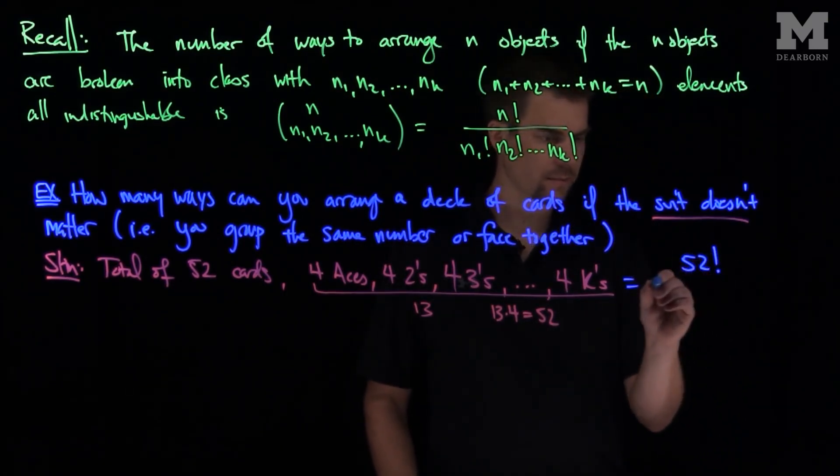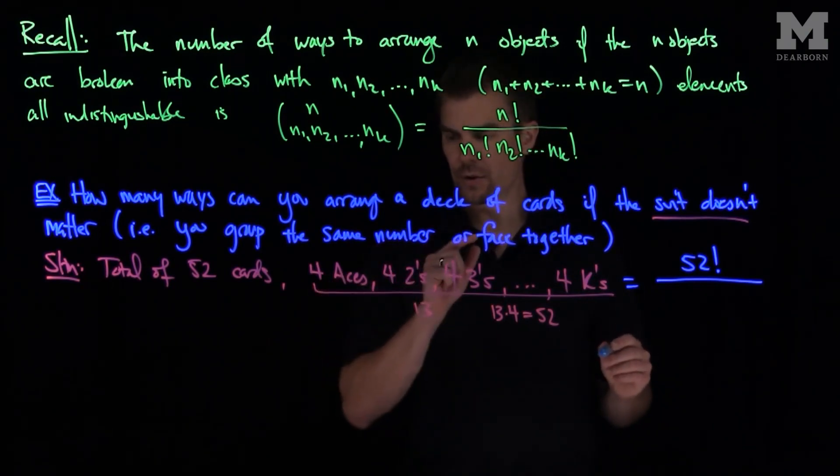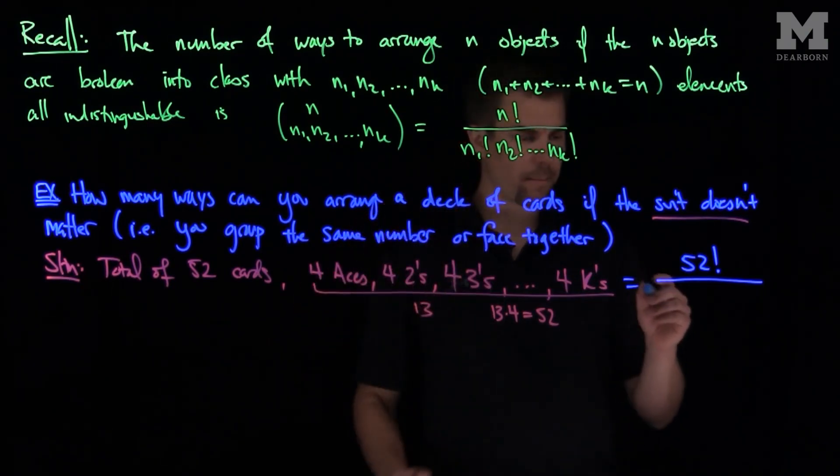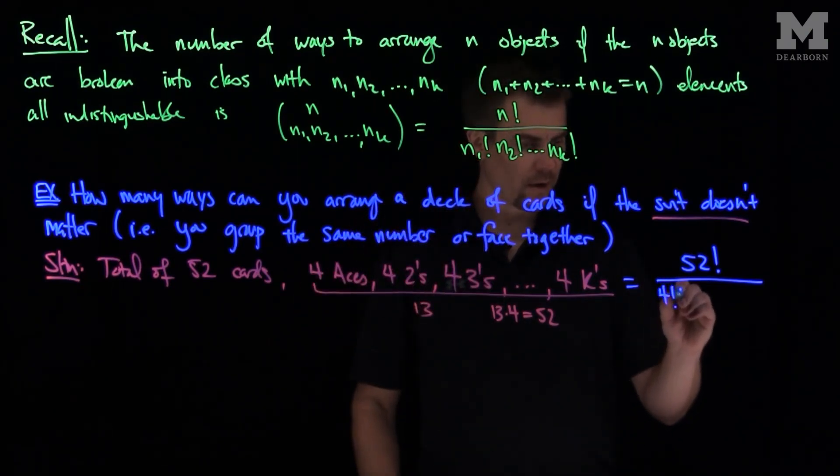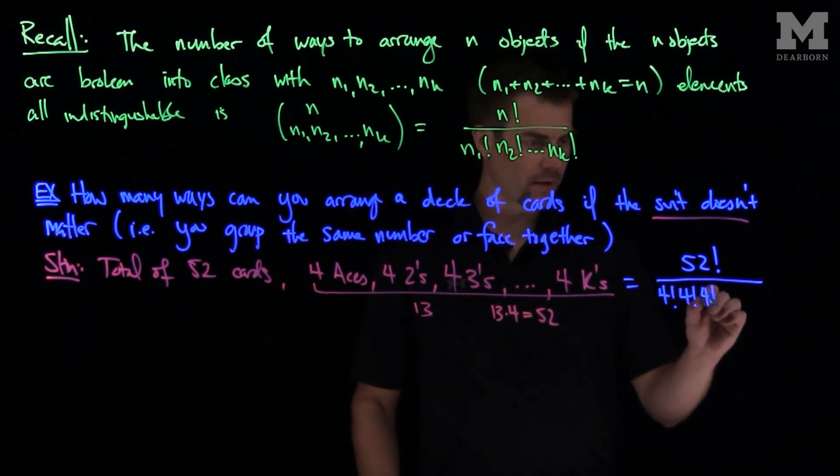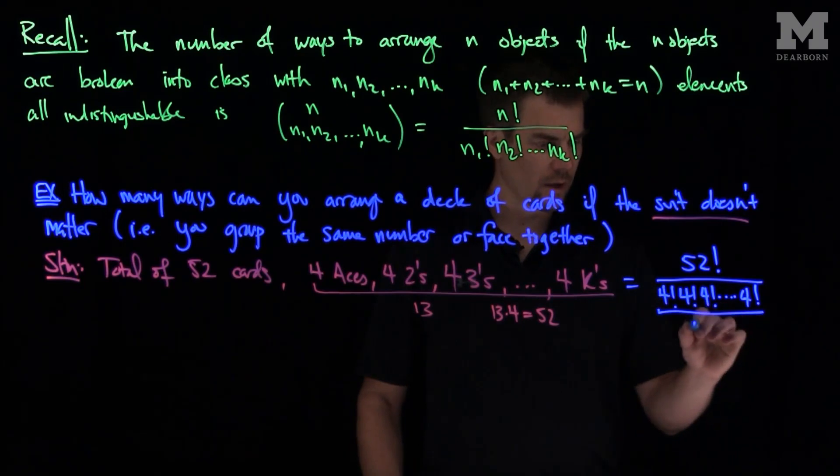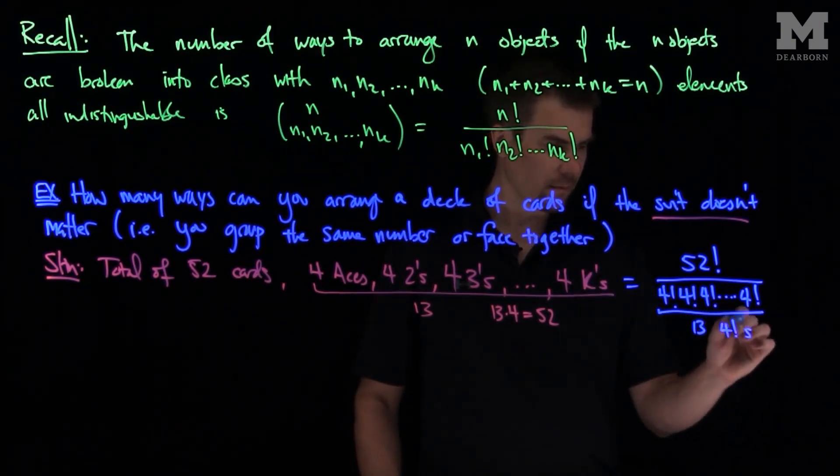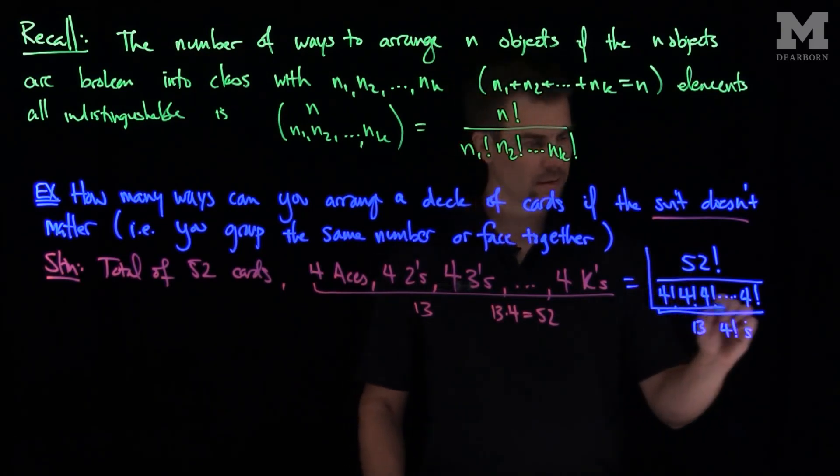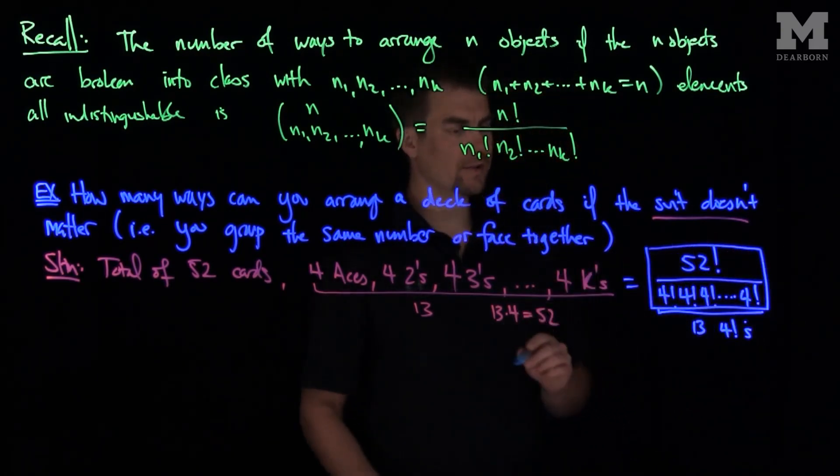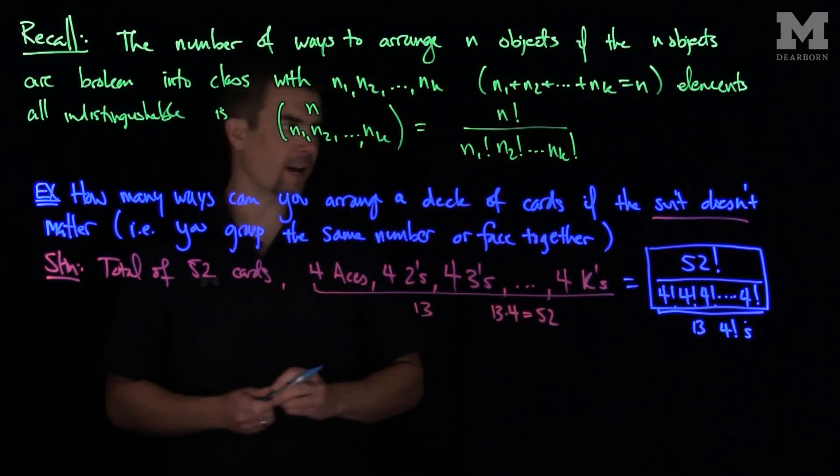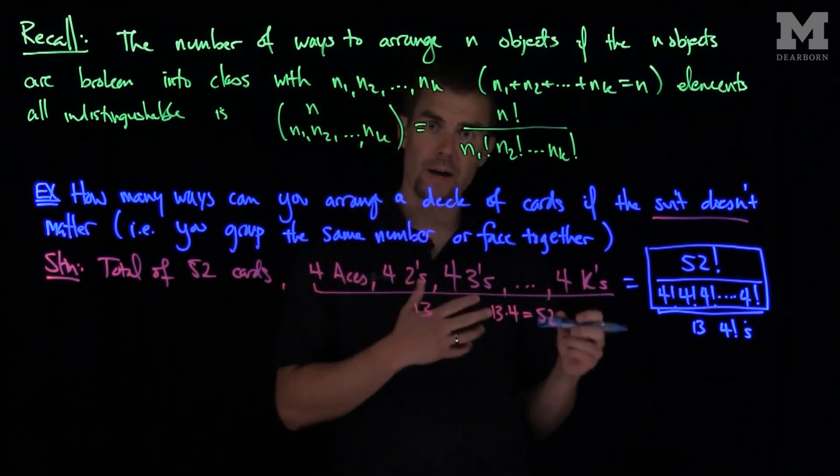And then each class has 4 members, so I have 4 factorial, 4 factorial, 4 factorial, all the way down to 4 factorial. There is a total of 13 of these 4 factorials. And this enormous number is the number of ways that we can arrange a deck of cards where suit doesn't matter.